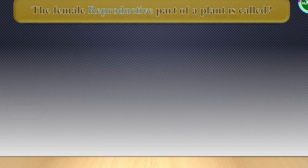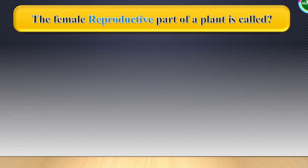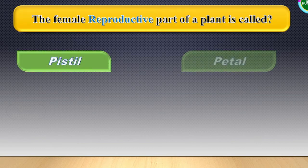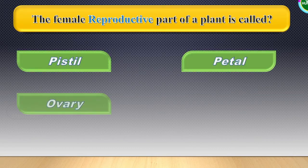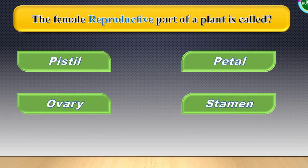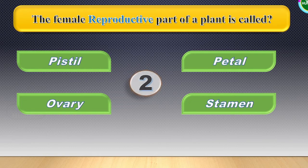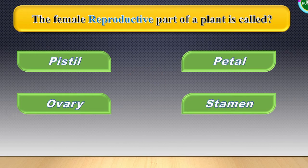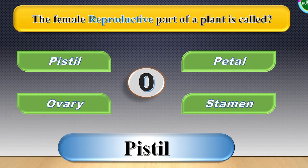Next question: The female reproductive part of a plant is called. The options are visible in the screen. Your time starts now. The correct answer for this one is pistil.